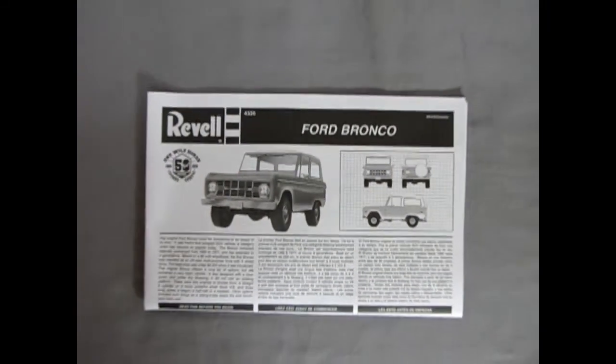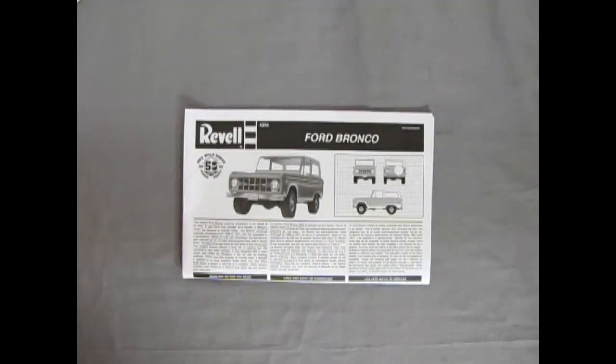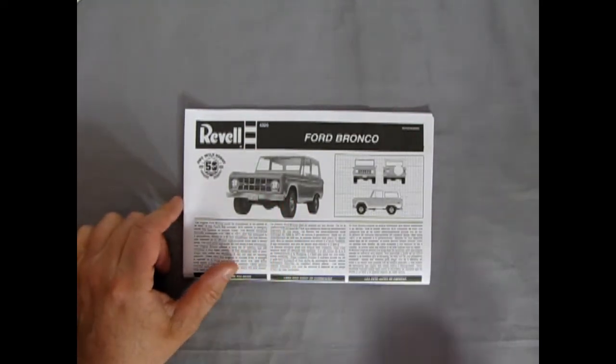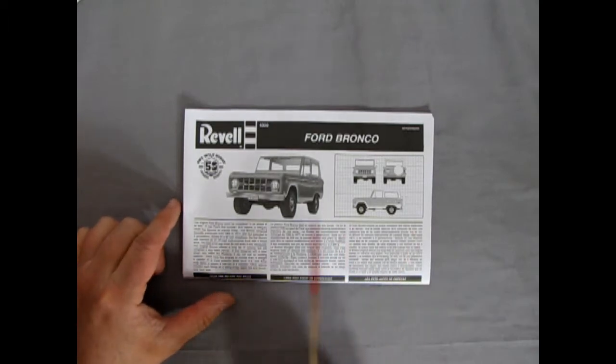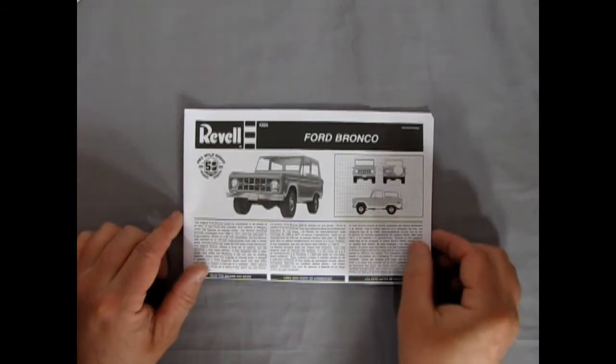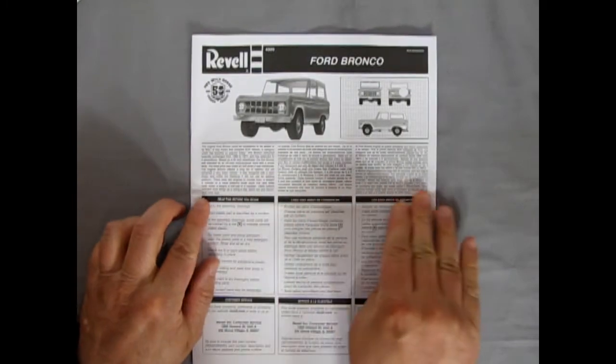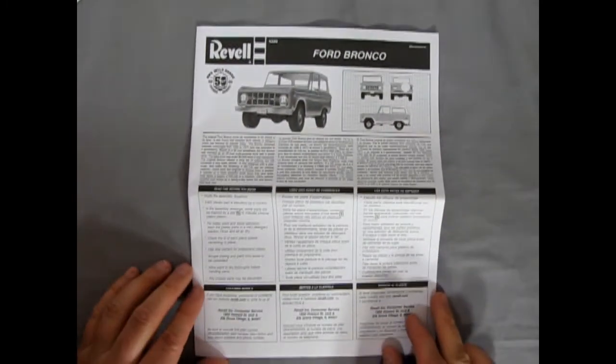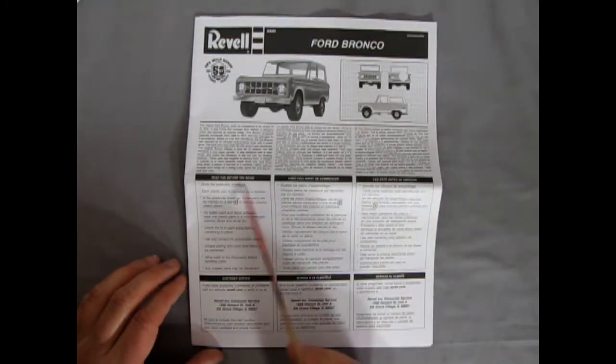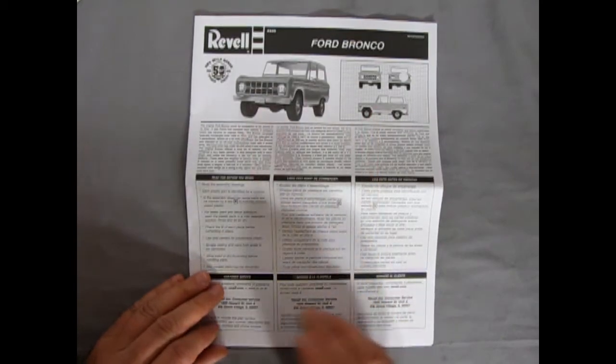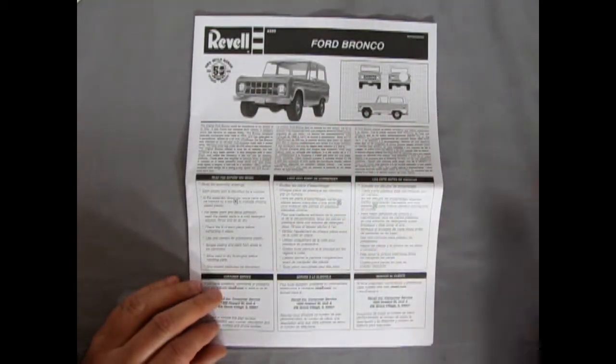And here we have our instruction sheet for our 73 Ford Bronco. And the only way that I know this kit is a 73 is because of the license plate decal in it. But like I said, these were made from 66 to 77. And there's very little change. There's a grill change and that's about it. But the rest stays the same. So opening up our instruction sheet. A nice hard crisp fold line in it. We have all the things you need to know before you begin, as well as the history and this nice blueprinted drawing of the Ford.